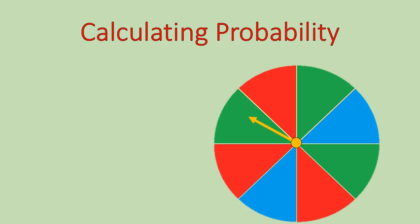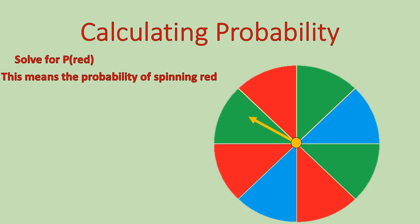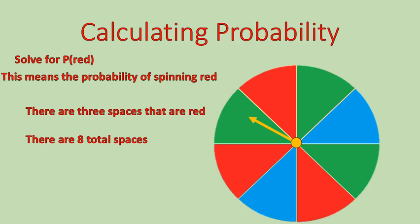Let's look at our next slide with a funky colored spinning circle. Try solving for P(red) — the probability of spinning red. Part of the challenge of learning probability is learning the way that we write probability questions. P(red) means the probability of spinning red. Spinning the spinner around, there are three red spaces out of a total of eight, so the probability of spinning red is three out of eight. What you're looking for goes in the numerator, and the total possible outcomes are in the denominator.